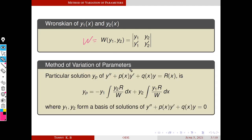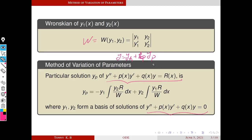The method of variation of parameters is a technique for finding the particular solution. The solution of this type of ODE is equal to YH plus YP. YH is the general solution corresponding to the homogeneous equation — that is, the right-hand side is zero. YP is any particular solution of the given ODE.